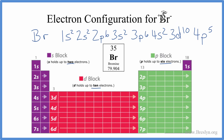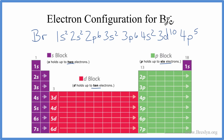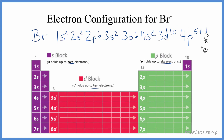But we wanted the electron configuration for the bromide ion. When we have an ion like Br⁻, the minus sign means that it gained an electron. Electrons are negative, so bromine has gained one electron. So we'll just add one to our 4p, giving us 4p⁶. This is the electron configuration for the bromide ion, Br⁻.